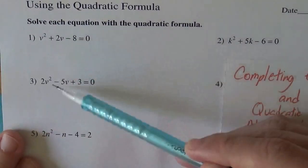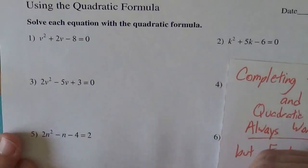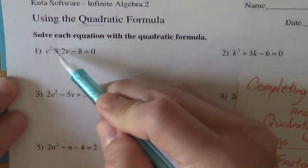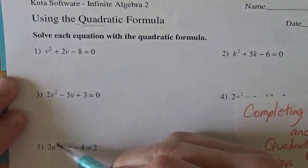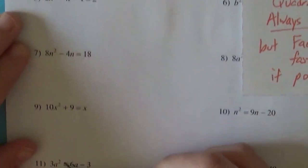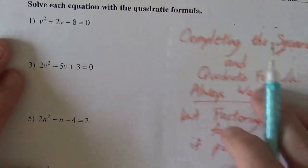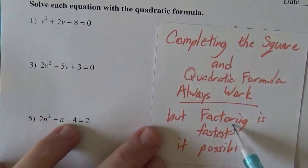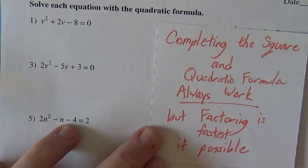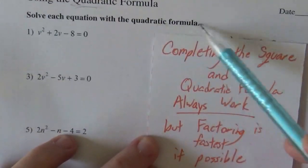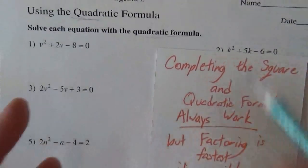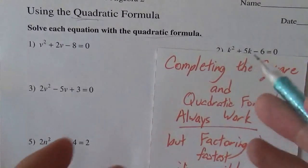We have to solve all of these quadratic equations. People kind of forget what quadratic means — it just means that the highest power is 2. In every single one of these equations, the highest power is 2. We've learned three methods of doing this: factoring, completing the square, and quadratic formula. This one says to do it by quadratic formula, but you're never forced to unless your teacher says you must do it this way.